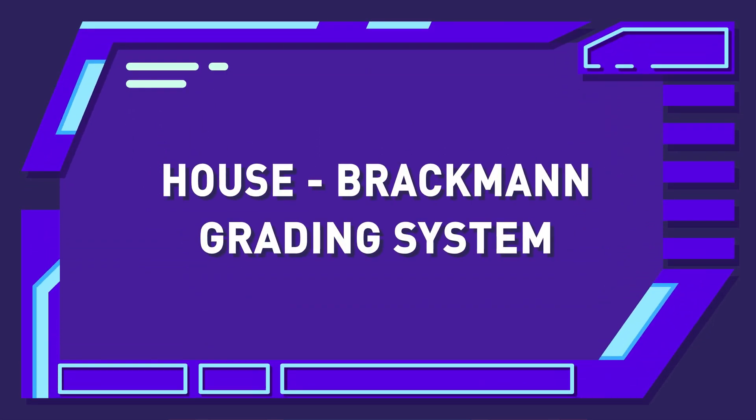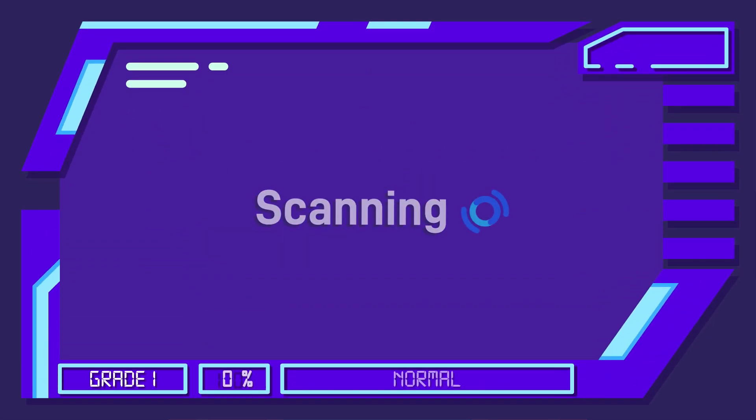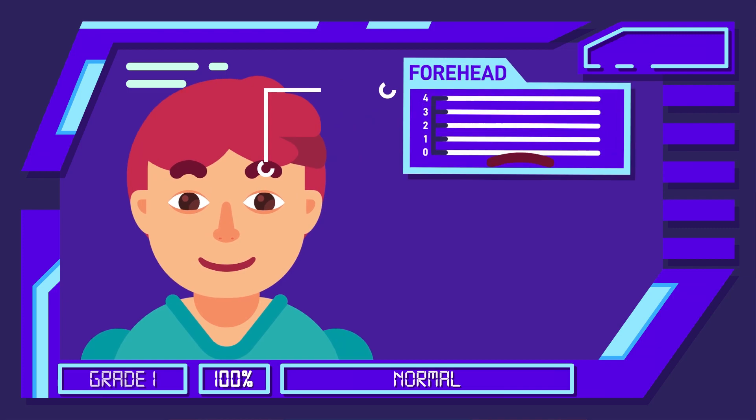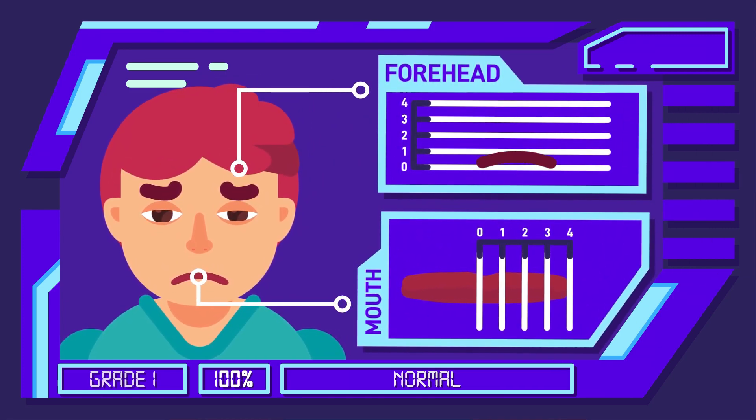The House-Brackmann grading system. A completely healthy person starts with grade 1 and has normal control of his or her facial muscles. They can easily move their forehead muscles, mouth and eyes without any issue.